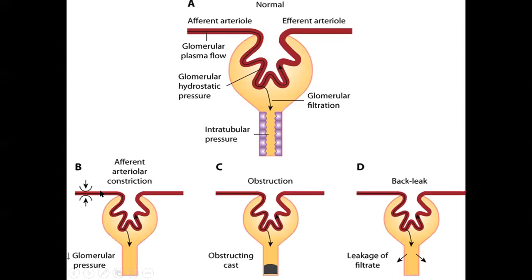For example, constriction of the afferent arteriole will reduce blood flow to the glomerulus and reduce glomerular pressure. Sometimes there is obstruction of the renal tubule, such as in renal stones blocking the pelvis, or any factor that impedes the flow of urine, which will affect GFR.